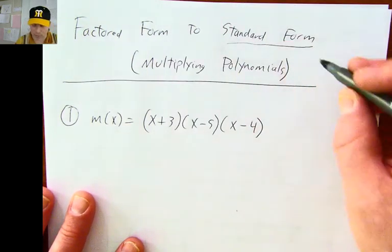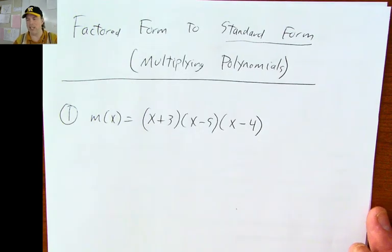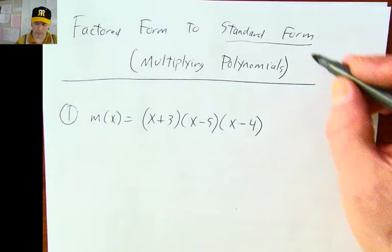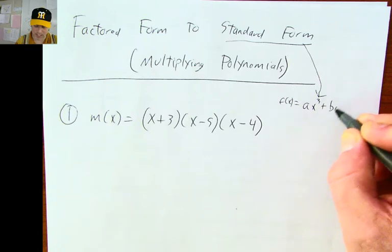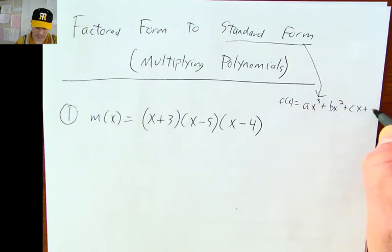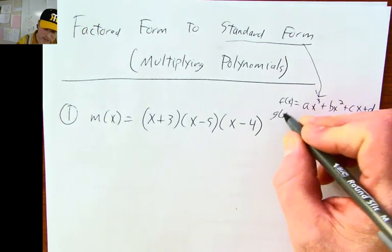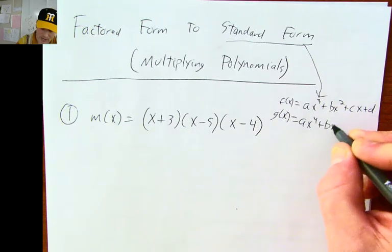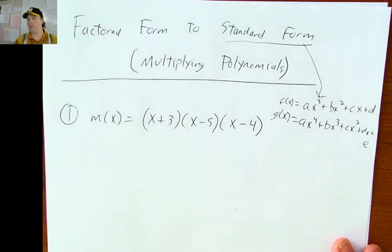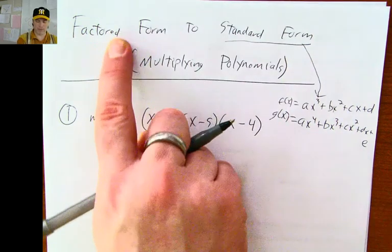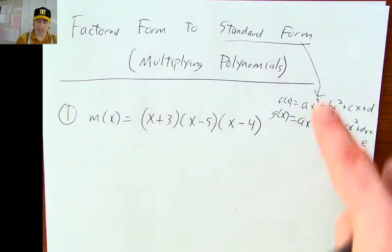Quick reminder: standard form for a polynomial — if you think back to quadratic, it was ax squared plus bx plus c. If it's a cubic function, standard form would be f(x) = ax cubed plus bx squared plus cx plus d. If it was a quartic equation — quartic meaning to the fourth power — it would be ax to the four plus bx cubed plus cx squared plus dx plus e. So that's standard form, and if you're in factored form, you're going to have to multiply a bunch of polynomials together to end up in standard form.